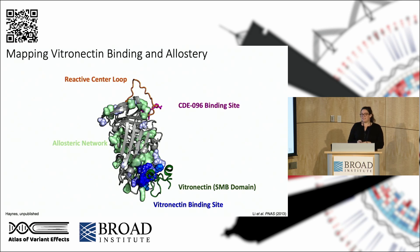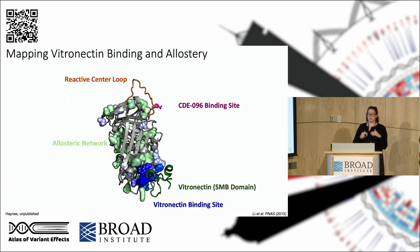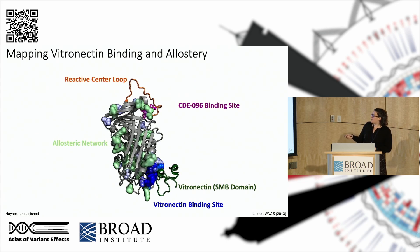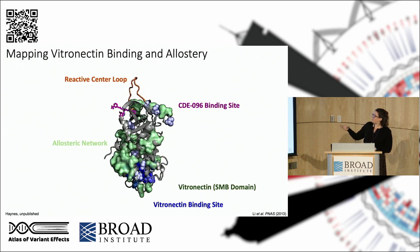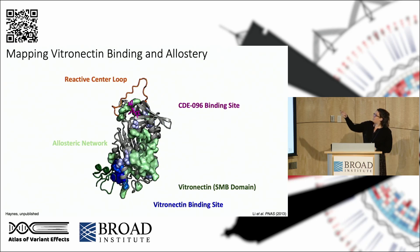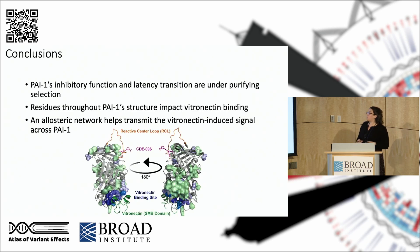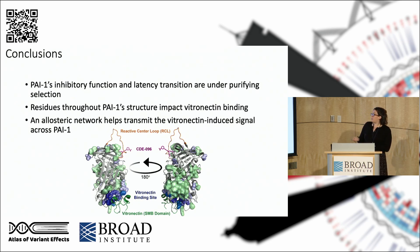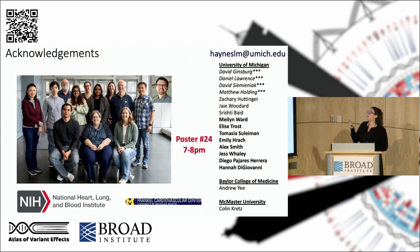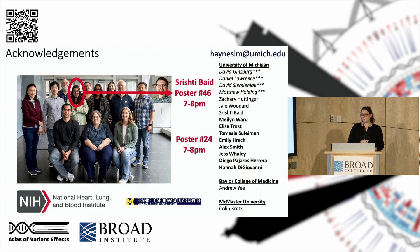To see how these sites are connected, we reduced the stringency of our screen and looked for any site with three amino acid substitutions that more weakly diminish PAI-1's ability to bind vitronectin, shown in light green. Those sites start at the known binding site, work their way up the back side of the molecule through glutamine 55, and up through the CDE-096 binding site. We think PAI-1's inhibitory functions and its latency transition are under purifying selection, and there's a network of amino acid residues that conveys the vitronectin signal upon its binding to PAI-1. I'd like to thank our group, and I'd especially like to call out Shrishti Beta in our lab, who also has a poster tonight looking at a bacterial modifier of the plasminogen activation system.